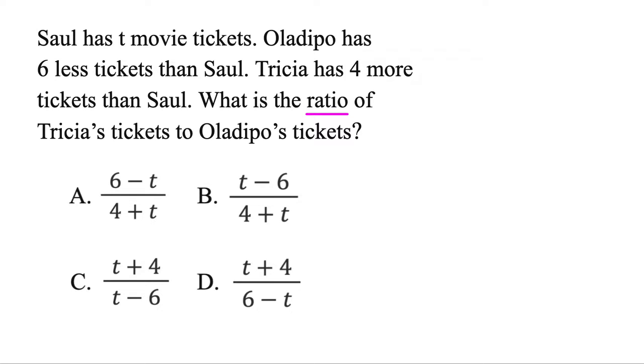Now this one's pretty complex, but we know it's a ratio, so we know they're all going to be a fraction. And let's jump into it here. Sol has T movie tickets. In other words, Sol is T. Oladipo has six less tickets than Sol. But we need to break this down a little bit here.